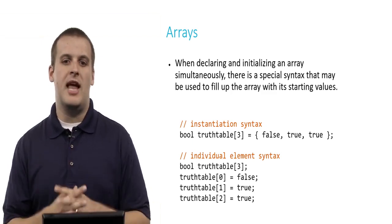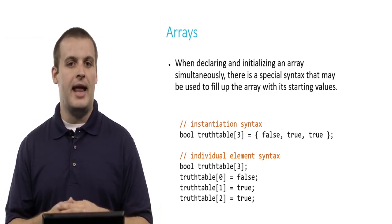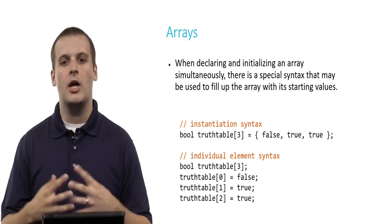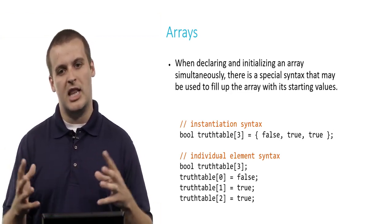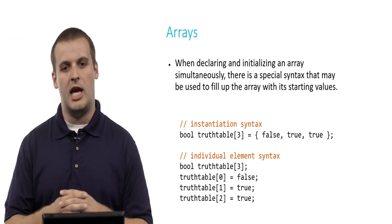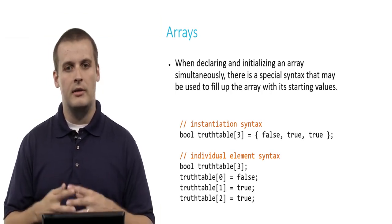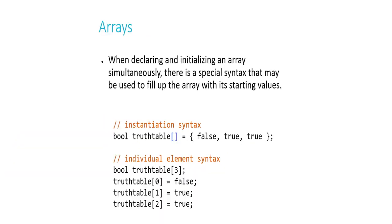Similarly, we could iterate over all of the elements of an array using a loop. A really good at-home exercise: how do you create an array of 100 integers where every element equals its index — 0 in the first element, 1 in the second, 2 in the third, and so on? Also note that when using this instantiation syntax, you can actually omit the number inside the square brackets. The compiler is smart enough to know you want an array of size 3 because you put 3 elements to the right of the equal sign.